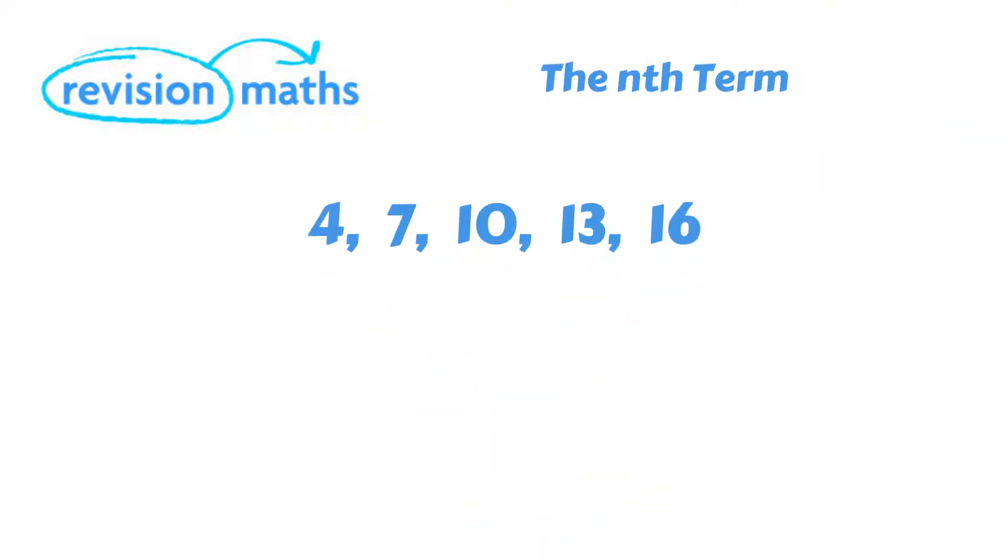So now let's move on to look at how we would write an expression for the nth term of an arithmetic sequence. Let's take the following sequence as an example: 4, 7, 10, 13 and 16. As you can see, the common difference is 3 as plus 3 is being added each time.